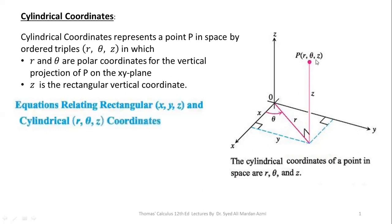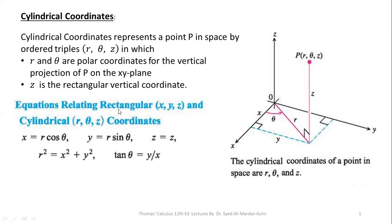Next, we have some transformation equations relating rectangular and cylindrical coordinates: X equals R cos theta, Y equals R sin theta, Z equals Z, R squared equals X squared plus Y squared, and tan theta equals Y over X. The forward transformation equations X equals R cos theta and Y equals R sin theta have already been studied in the polar coordinate system. Similarly, the reverse transformation equations R squared equals X squared plus Y squared and tan theta equals Y over X are also studied in polar coordinates. For the third axis Z, we take Z equal to Z in both coordinate systems.